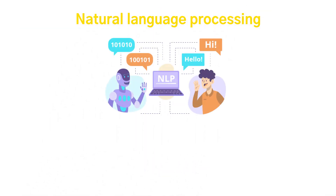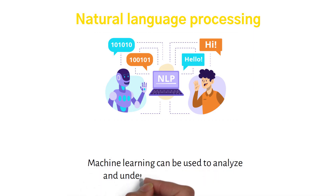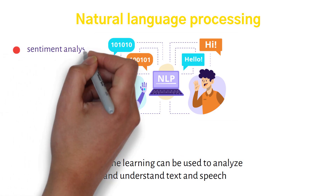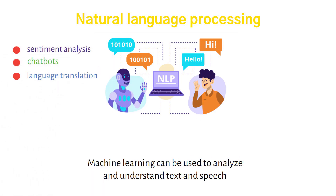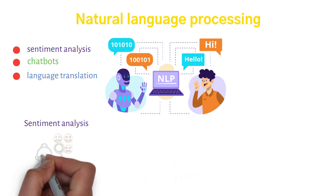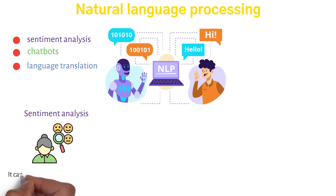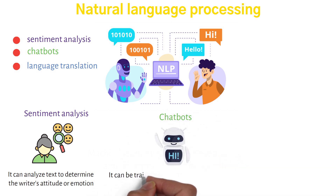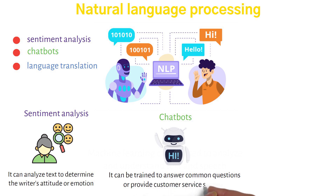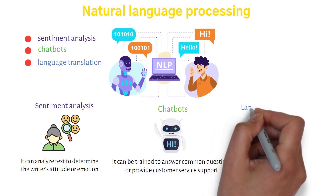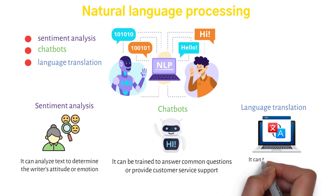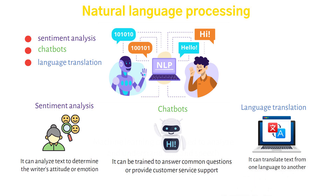Natural language processing: machine learning can be used to analyze and understand text and speech, for tasks such as sentiment analysis, chatbots, and language translation. In sentiment analysis, machine learning algorithms analyze text to determine the writer's attitude or emotion towards a subject. For chatbots, algorithms can be trained to answer common questions or provide customer service. For language translation, algorithms can translate text from one language to another, making it easier to communicate across language barriers.